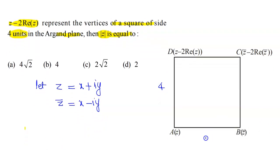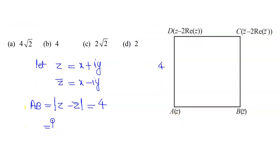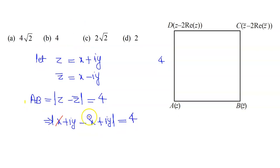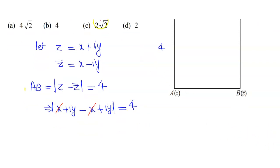If I see the distance between points A and B, then AB equals, using the complex formula, z minus z bar. This equals 4.